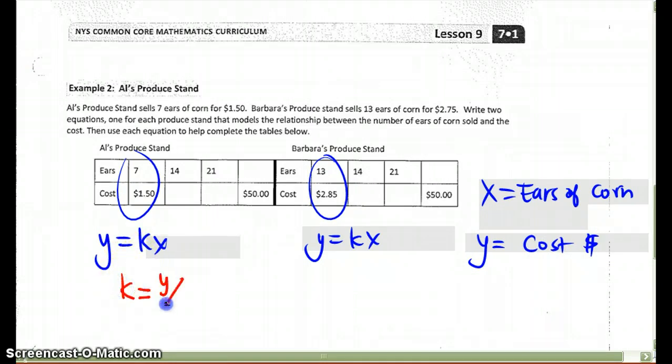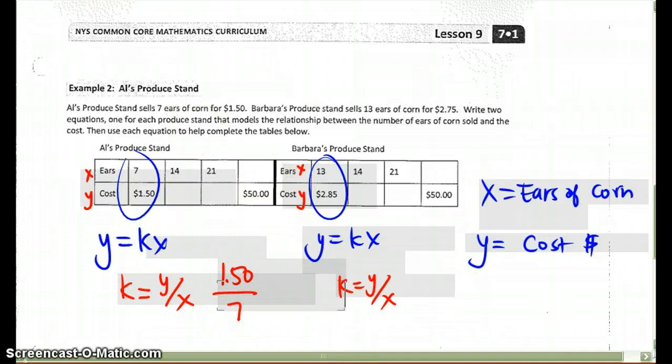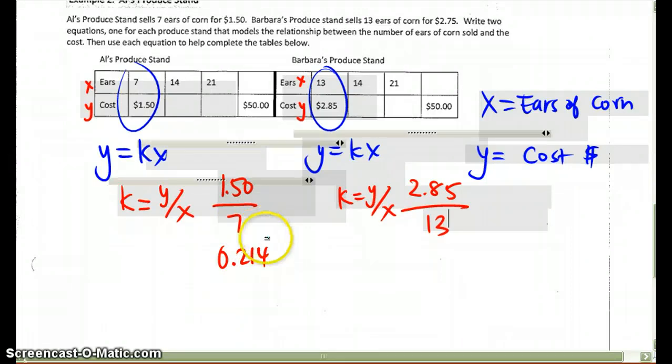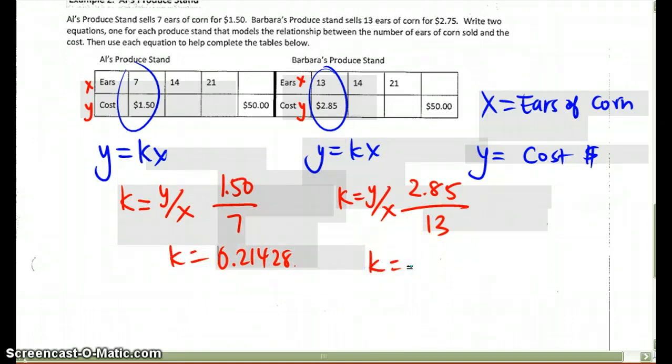Our k is going to be y over x for both. The ears is x, the cost is y. I'm going to take $1.50 here and divide it with 7. For Barbara's, I'm going to take 2.85 and divide by 13. You are welcome to use a calculator when you're doing this. I got a decimal that was 0.21428. Here my k is equal to 2.85 divided by 13, which is going to give me 0.2192.